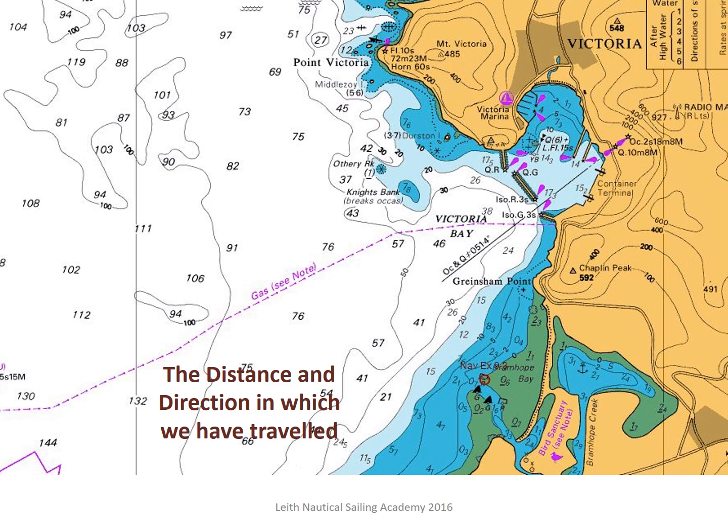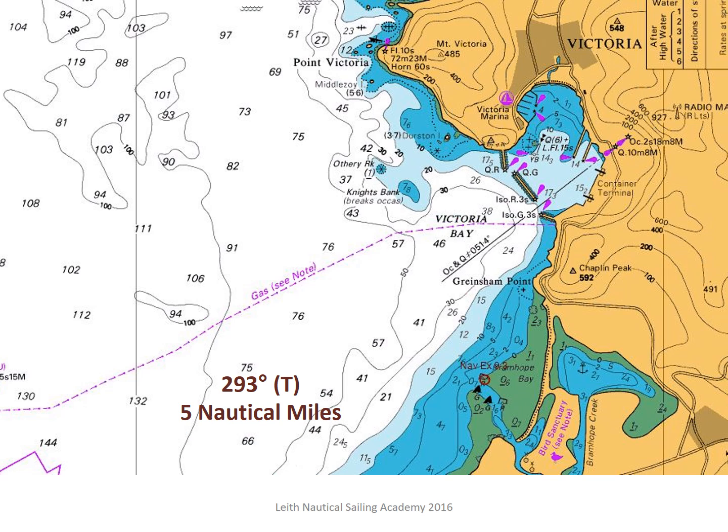From our start position we now need to mark the distance and the direction in which we have travelled. In this example the direction in which we have travelled was 293 degrees true and the distance which we have travelled is 5 nautical miles.